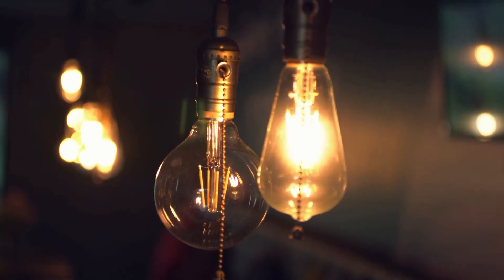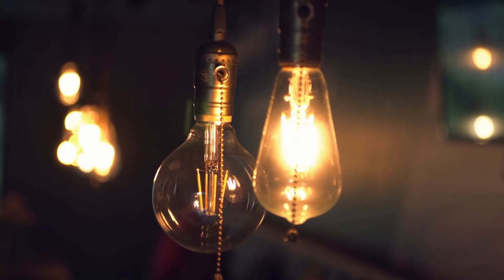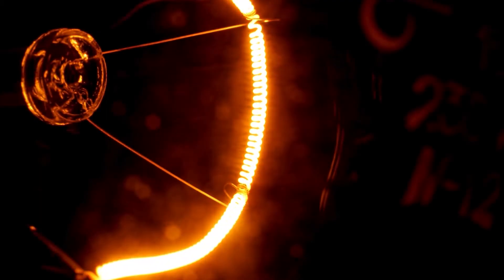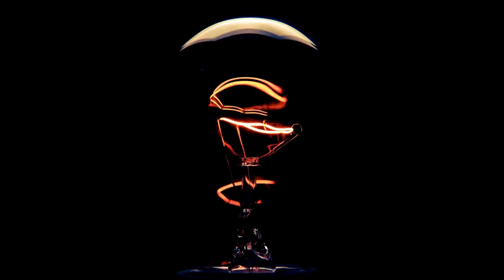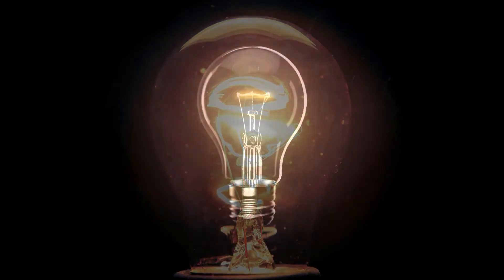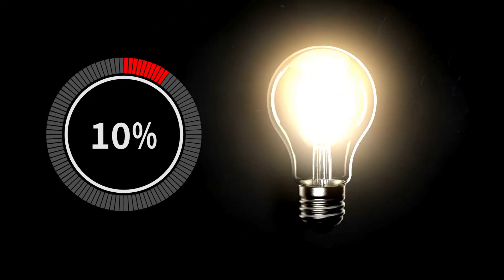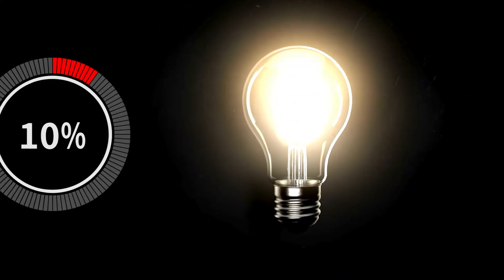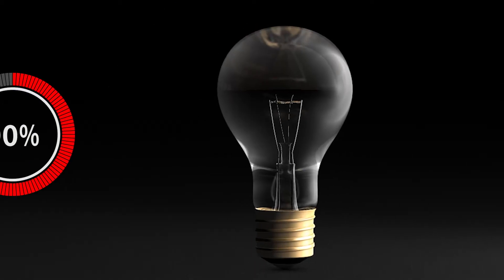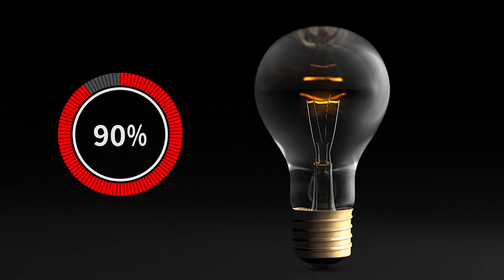Now, here's where things get interesting. While traditional incandescent bulbs are simple, they're not very efficient. They use a lot of energy, and here's the physics part: most of the energy they use turns into heat, not light. In fact, only about 10% of the electricity they use becomes visible light, while the remaining 90% disappears as wasted heat.